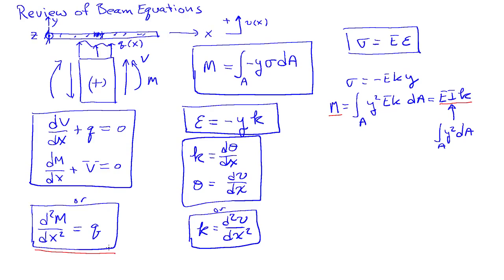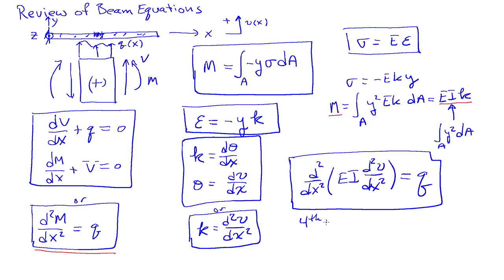I can substitute that into the equilibrium equation. And I can arrive at a single governing differential equation for the whole system. Two derivatives of EI, two derivatives of the deflection equals q. So where I have substituted in for kappa in terms of second derivative of the deflection. So I have a fourth order ordinary differential equation.